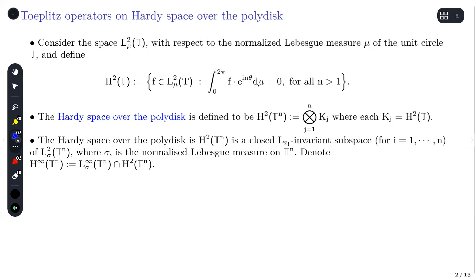We first define what is called a Hardy space over a disk. I'm actually talking about circles and torus — the disk won't be appearing here directly. How we define the Hardy space over the circle: we take all square integrable functions with respect to the normalized measure, and we want all the negative Fourier coefficients of f to be zero. We collect all such f and call it the Hardy space over the disk or circle.